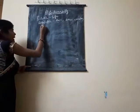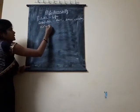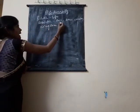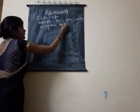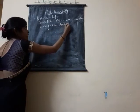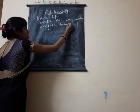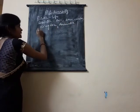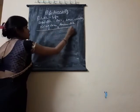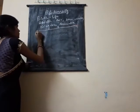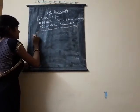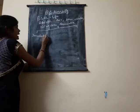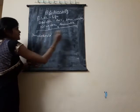Kingdom Animalia is the kingdom in which all animals, either vertebrate or invertebrate, are placed together. Kingdom Animalia was further subdivided into two groups: invertebrate and vertebrate.